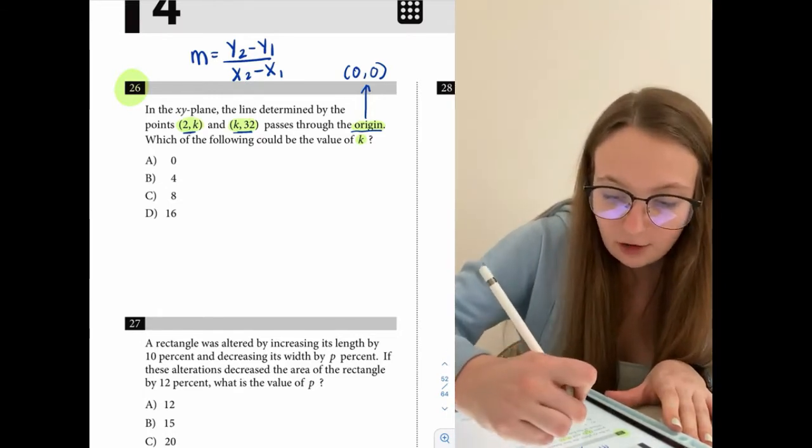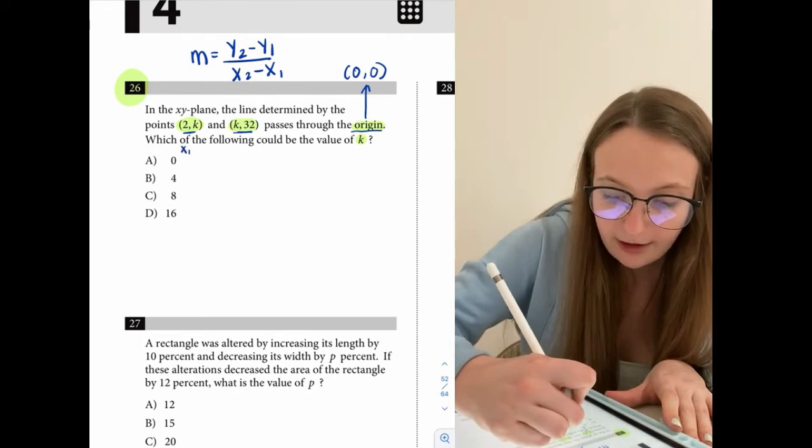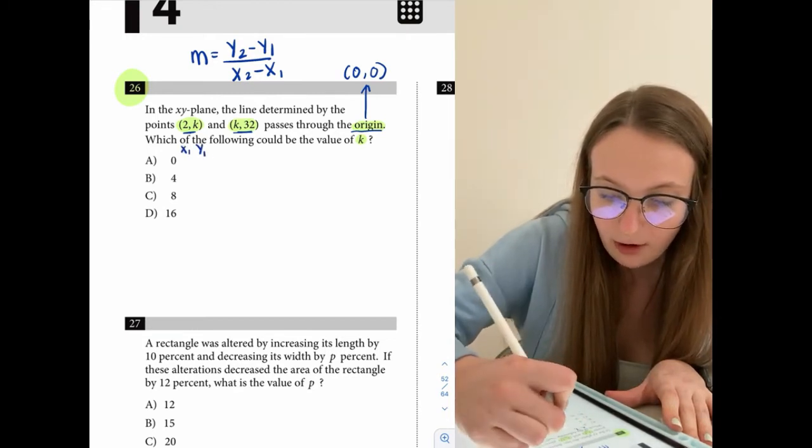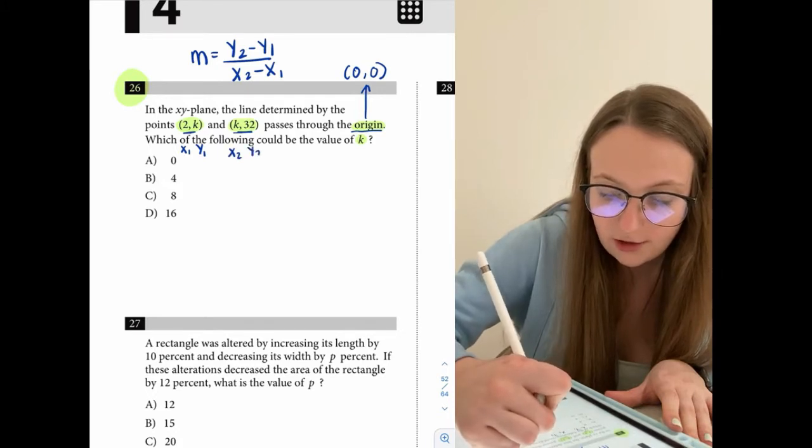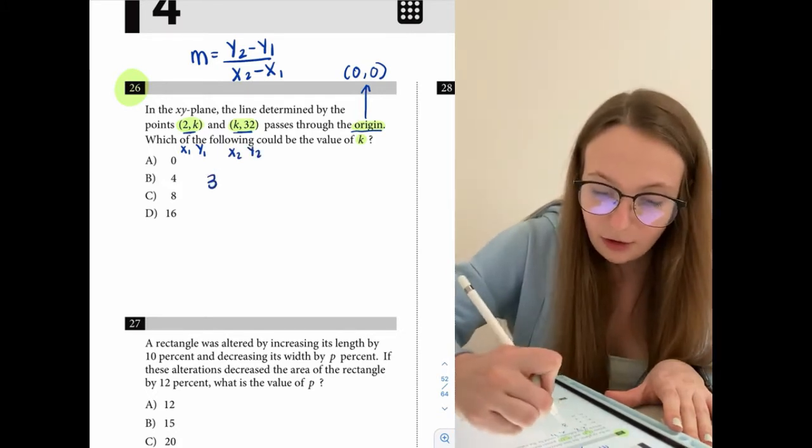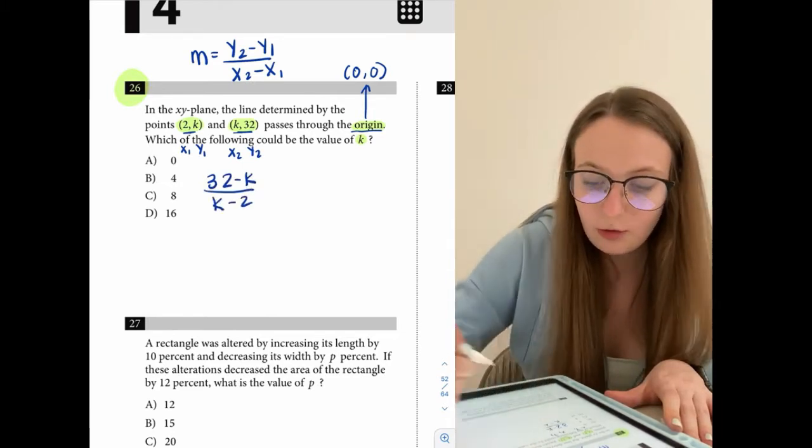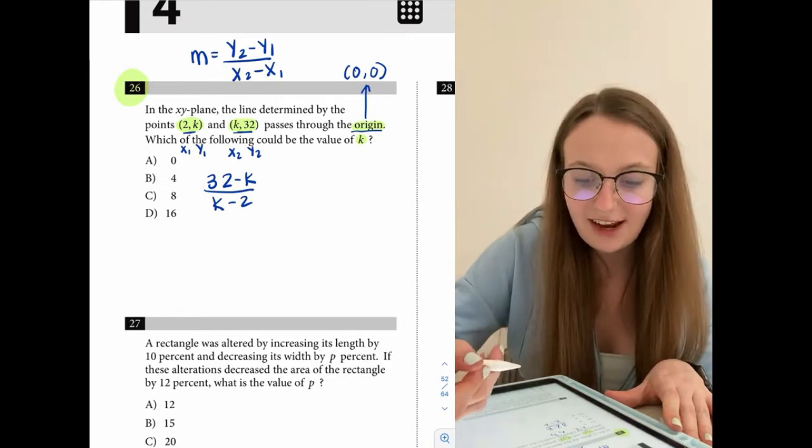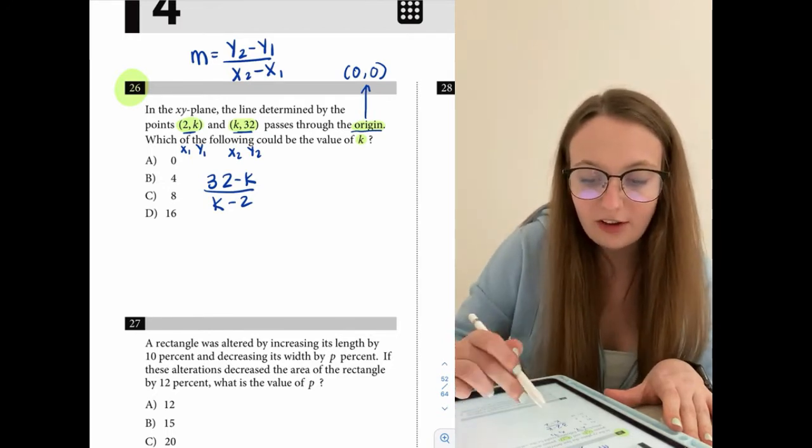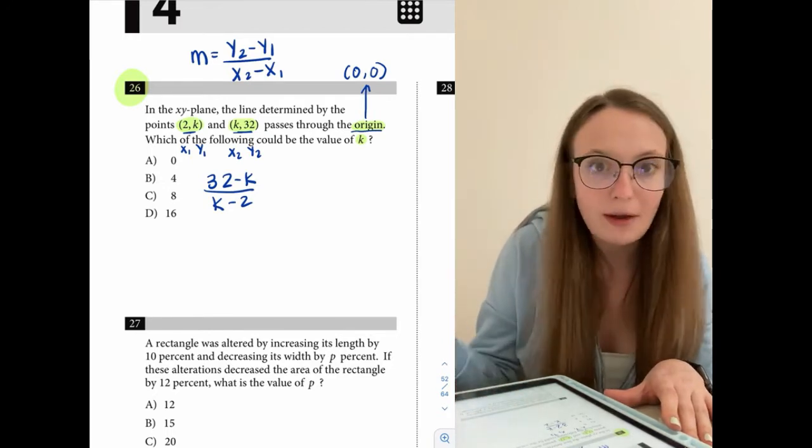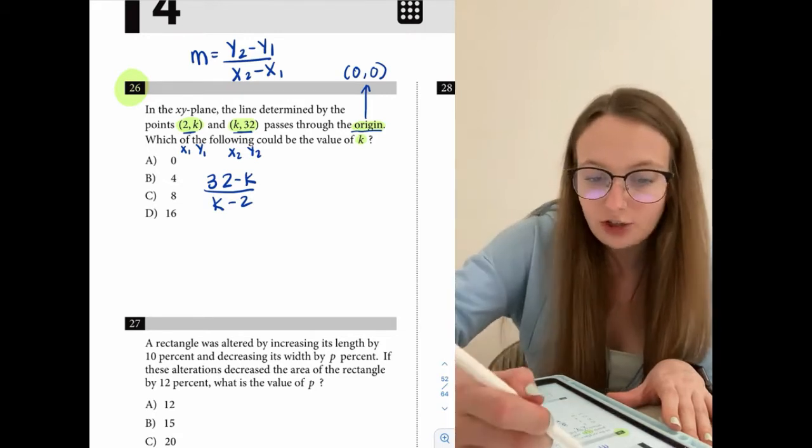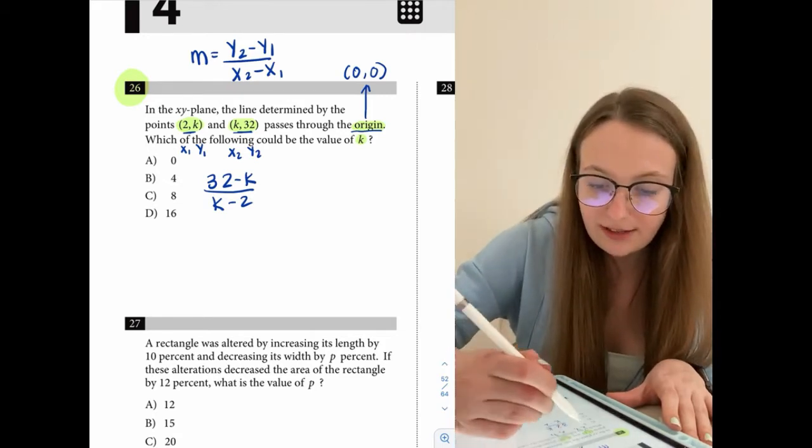So if we tried finding the slope, let's call 2, x1, we'll call k, y1 and then we'll call this k, x2 and then we'll call 32, y2. So that would give us 32 minus k over k minus 2. And as you can see, that really doesn't help us at all here because we have a k in the top and the bottom. So that really isn't giving me much information at all. So that's going to be a dead end.